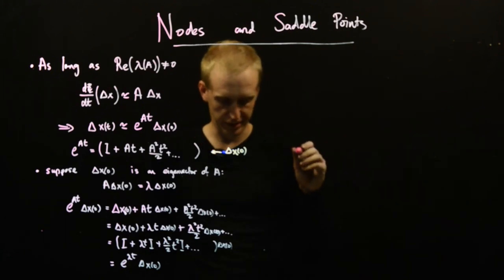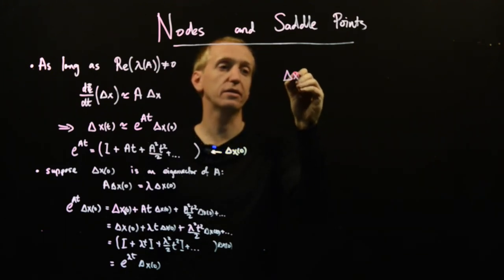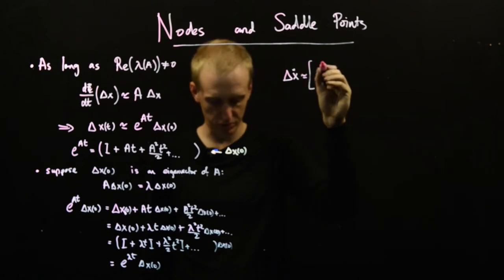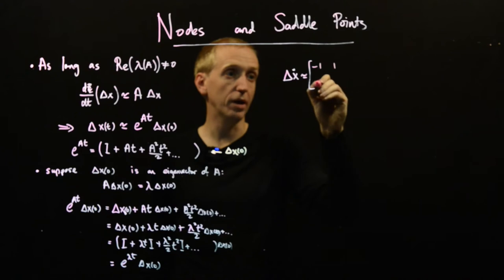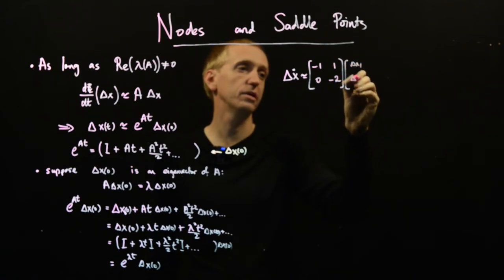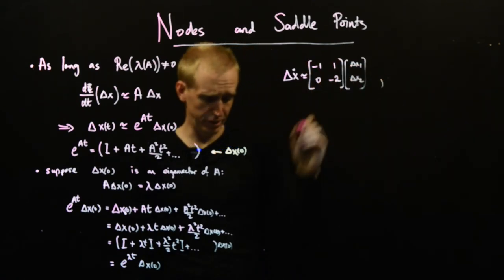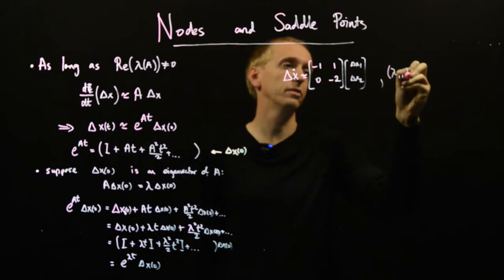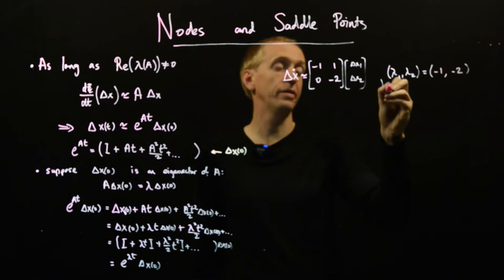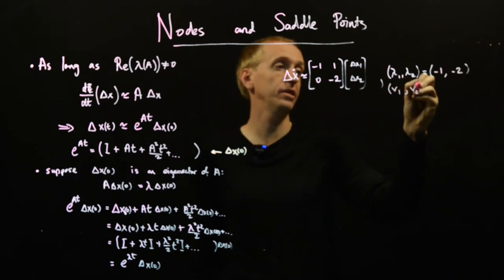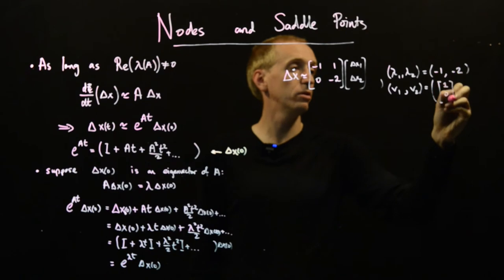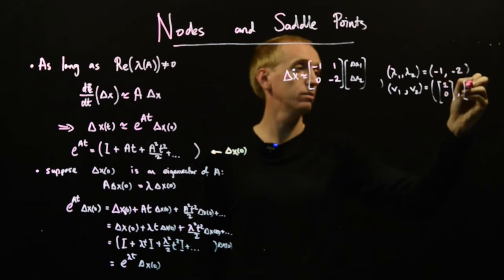Let's do an example. Say delta x dot is approximately equal to the matrix minus 1, 1, 0, minus 2, times the vector delta x1, delta x2. This matrix has eigenvalues lambda 1 and lambda 2 equal to minus 1 and minus 2. The corresponding eigenvectors are v1 equal to (1, 0) and v2 equal to (minus 1, 1).